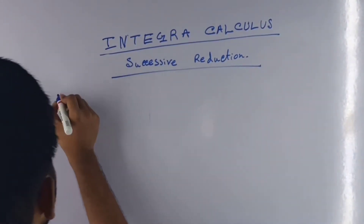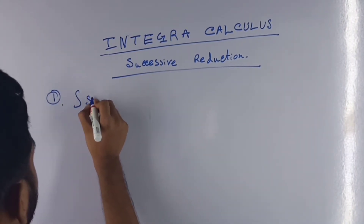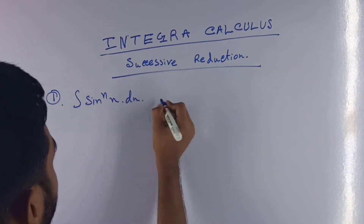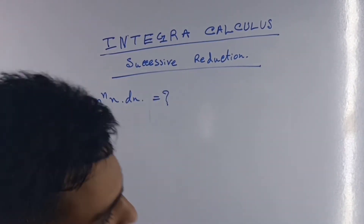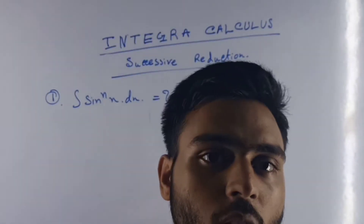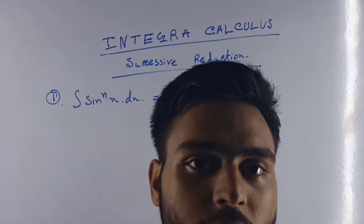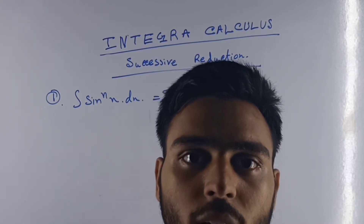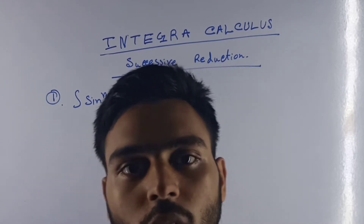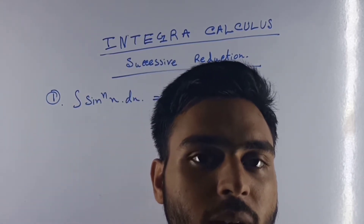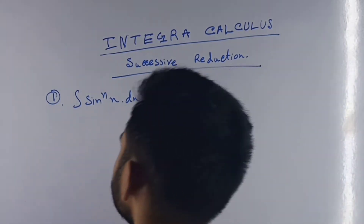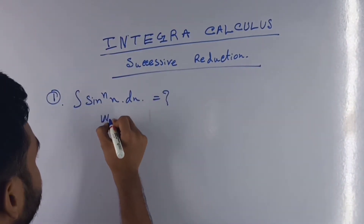Let's start. Our first question is the integration of sin to the power n of x dx. We will find its answer by the successive reduction formula of integral calculus. It's a natural formula of successive reduction, and it also involves integration by parts as part of the successive reduction formula.